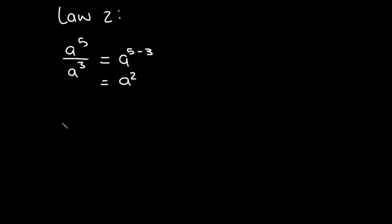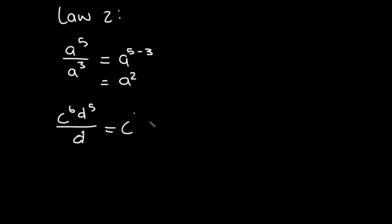Another example: we're given c to the power of six over d to the power of five, all over d. There is no c in the denominator, so c stays the same: c to the power of six. For d, there's an invisible one on the lower d, so it's d to the power of five minus one, giving us a final answer of c to the power of six times d to the power of four.